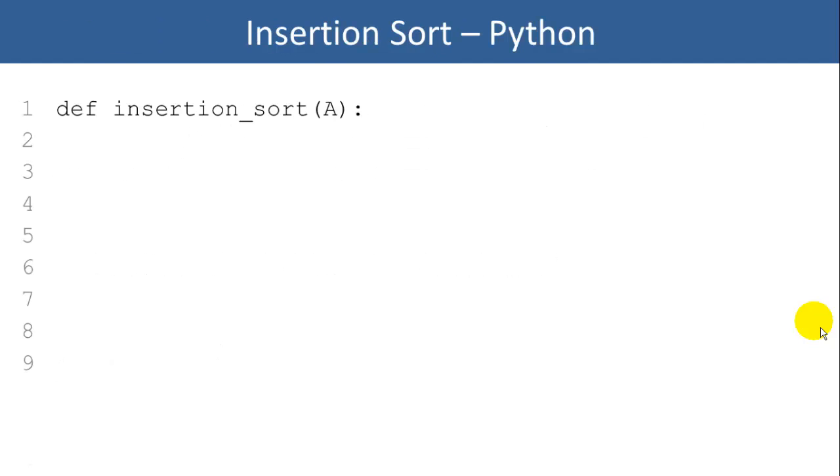So how can we write a Python program to do insertion sort? First we'll define a function called insertion sort that accepts a list A. We're going to have an outer loop with loop variable I that's going to cover a range from 1, which is the second item in the list, all the way to the very end of the list.